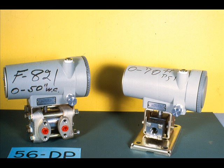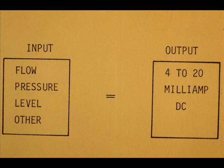The Westinghouse Ferratrack 56DP and 56P are examples of motion balance electronic differential pressure and pressure transmitters. They convert process input variables to a 4 to 20 milliamp DC output for the respective input range.